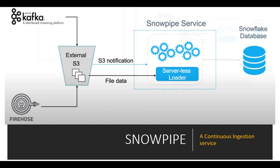Snowpipe enables us to pick all the files stored on the S3 location. Using S3 notifications and the SQS service of AWS, we configure both Snowflake and S3 so that once a file is loaded to S3, a notification is sent to Snowflake to ingest the data. The data is then automatically ingested from S3 to the respective tables in Snowflake.